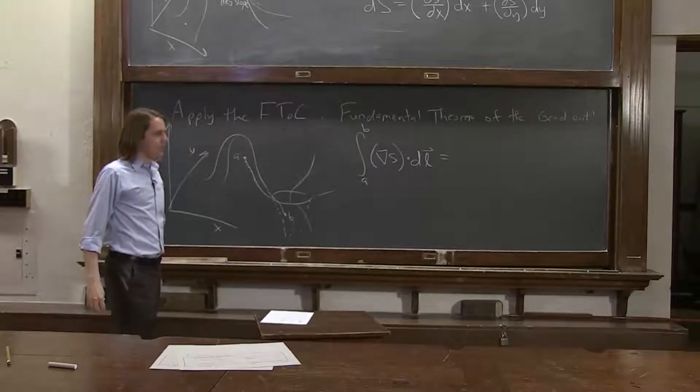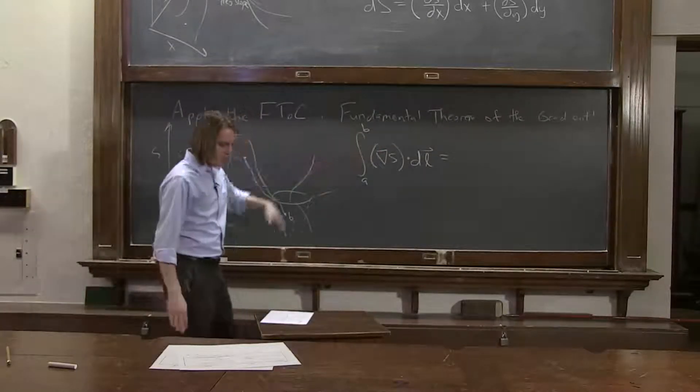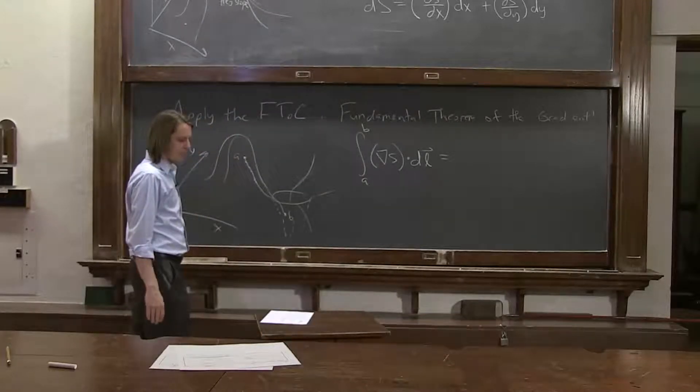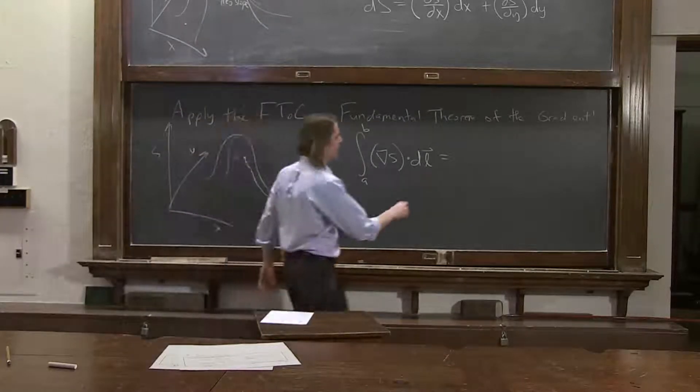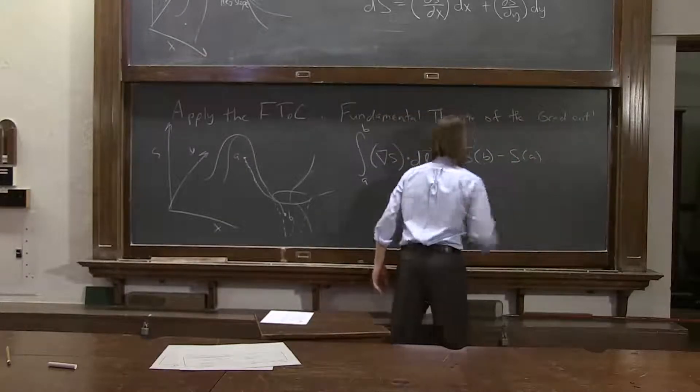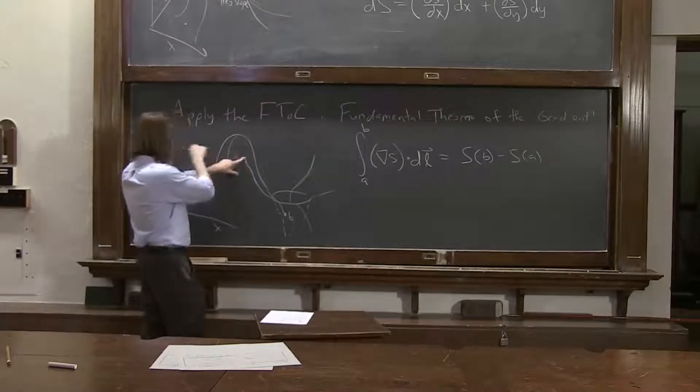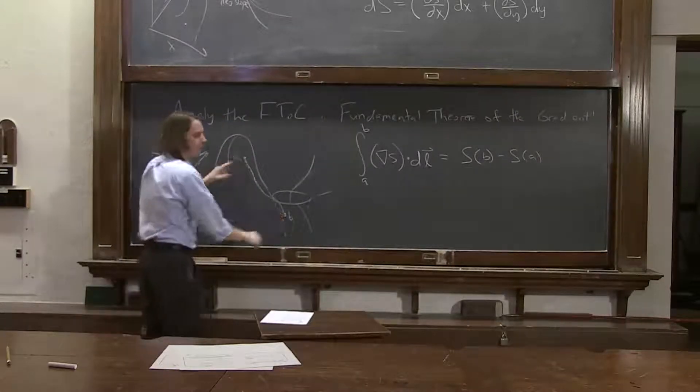The integral of a derivative over a region, that's what we have there, is related to the values at the boundary. So that equals SB minus SA. This will just give you, literally, the difference between the height, the scalar height here, and the scalar height here.